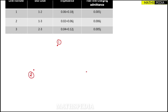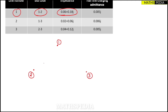Let me draw: node one, node two, and node three. Between node one and two, from the table, we have line number one with impedance 0.06 + j0.18. So we have one line between nodes one and two with that impedance.